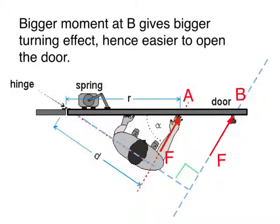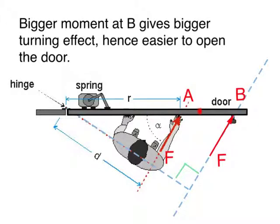Bigger moment comes about because of bigger perpendicular distance — in this case, it is this distance from the pivot to the line of action of the force. Not this distance, which is not perpendicular to the line of action of the force.